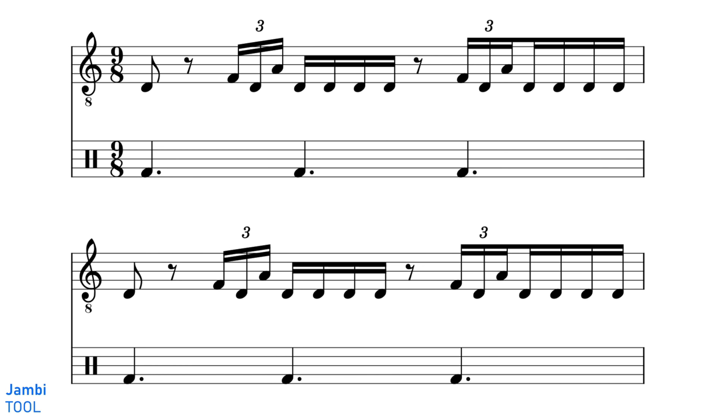Jambi by Tool sort of mixes the compound and odd approaches to 9-8 time. The kick drum is keeping down the regular set of three dotted quarter notes per bar, keeping that isochronal beat going, but the vocal and guitar line over the top are not sticking to the regular grouping of eighth notes, and are instead winding their own unusual rhythms over the top.